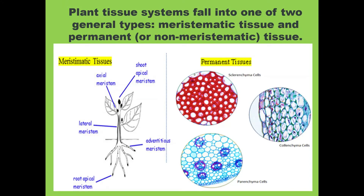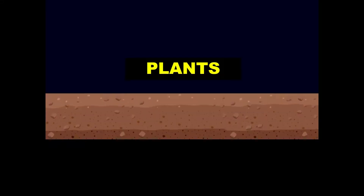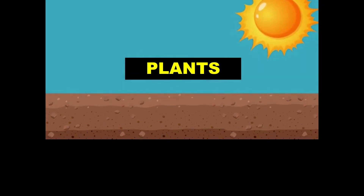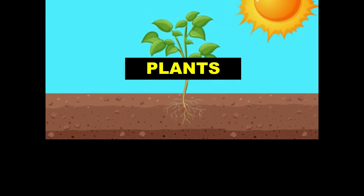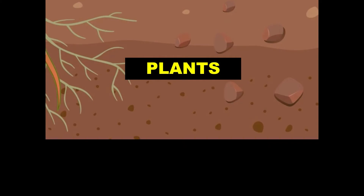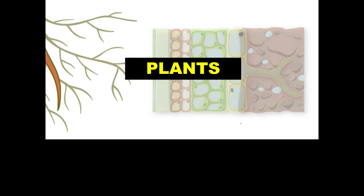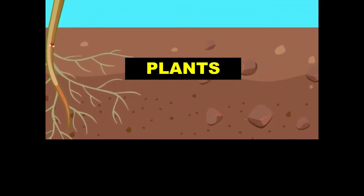Examples of multicellular organisms include plants, which are multicellular eukaryotic organisms. The plant tissue system generally consists of two main types of tissues: the first is meristematic tissue and the second is permanent tissue. The main functions of plant tissues include anchoring the plant to the soil, absorbing water and minerals, transporting them upwards, and storing the products of photosynthesis.